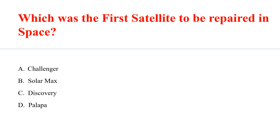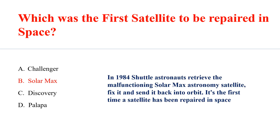Which was the first satellite to be repaired in space? The answer is Solar Max. In 1984, shuttle astronauts retrieved the malfunctioning Solar Max astronomy satellite, fixed it, and sent it back into orbit. It was the first time a satellite had been repaired in space.